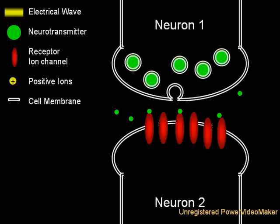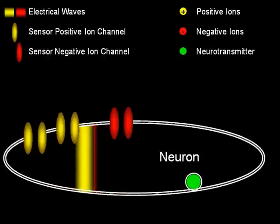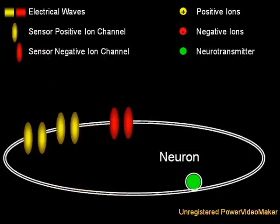But others allow negatively charged ions to flow into the cell. These can essentially cancel out any positive waves, thereby preventing the cell from releasing neurotransmitter, and are therefore called inhibitory synapses.